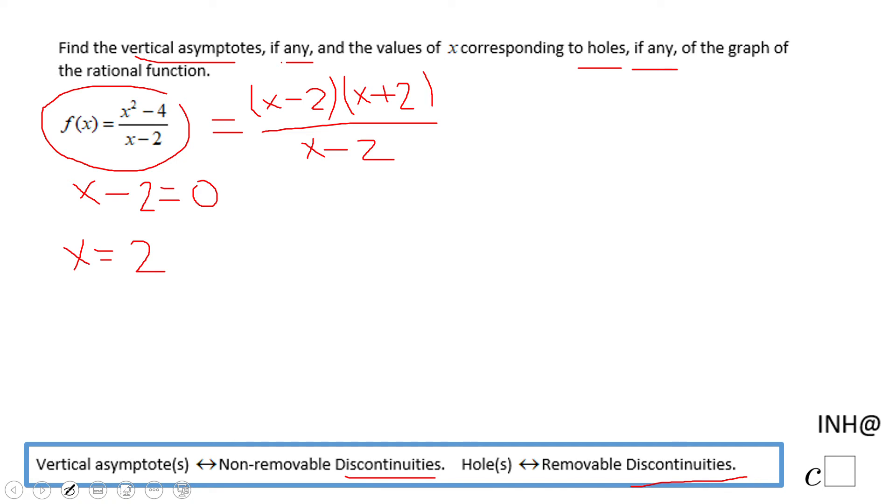And if you notice now, the x minus 2 cancel out, it's removed. So that tells us this x equals 2 is a removable discontinuity.